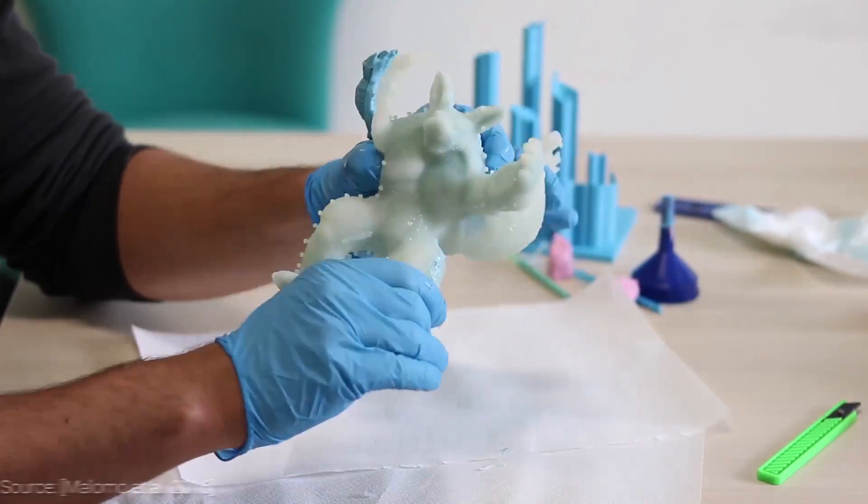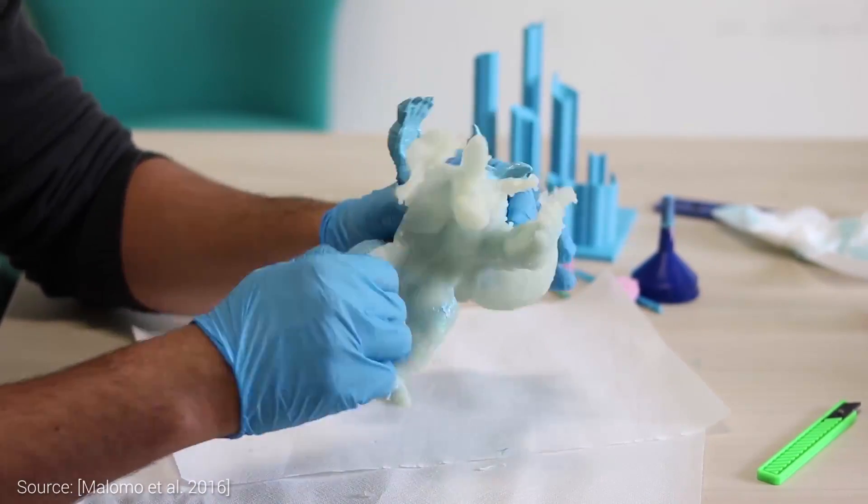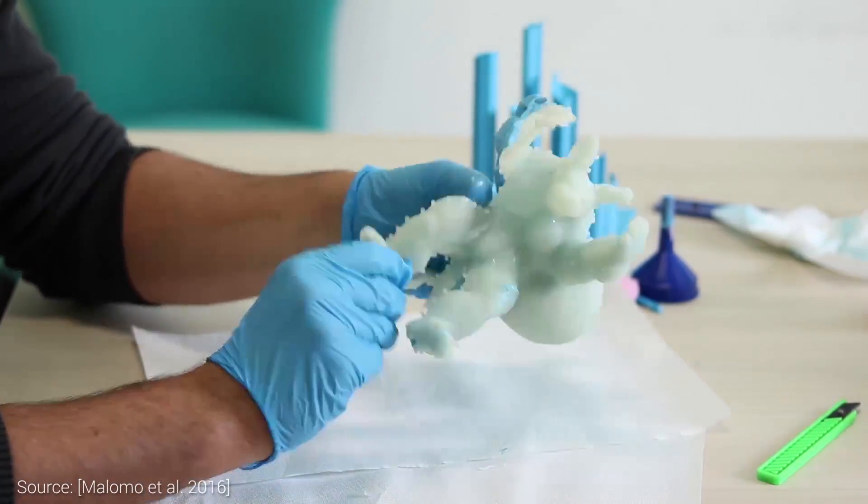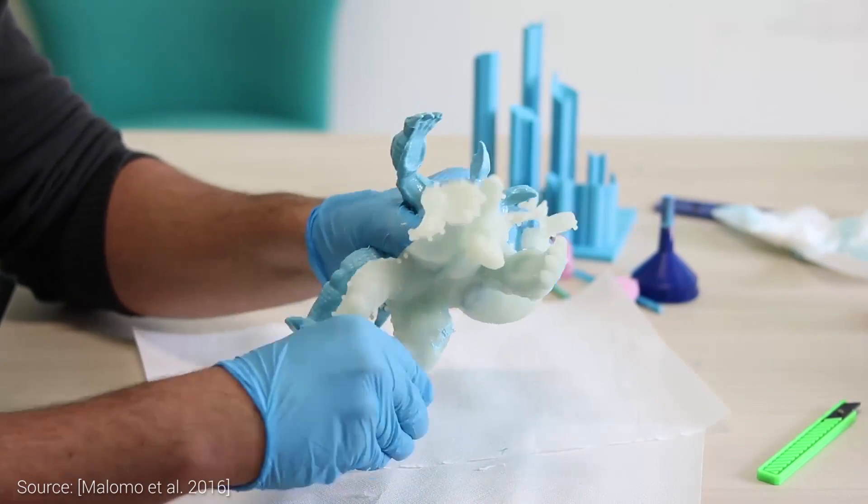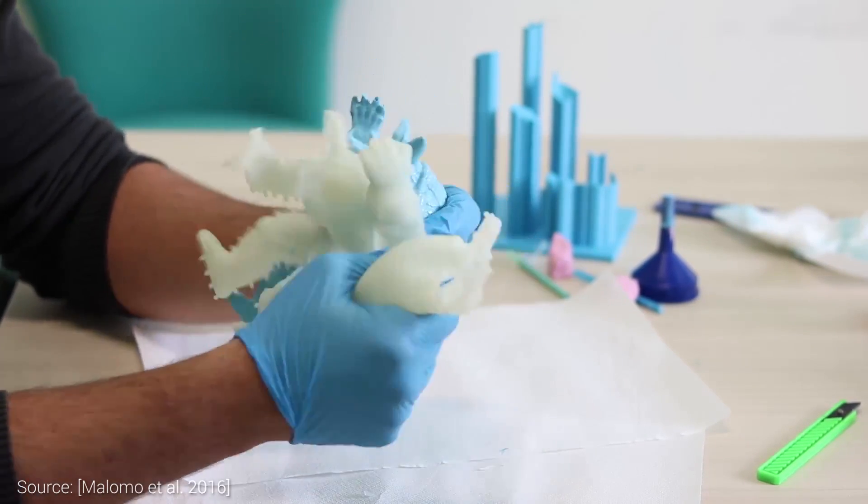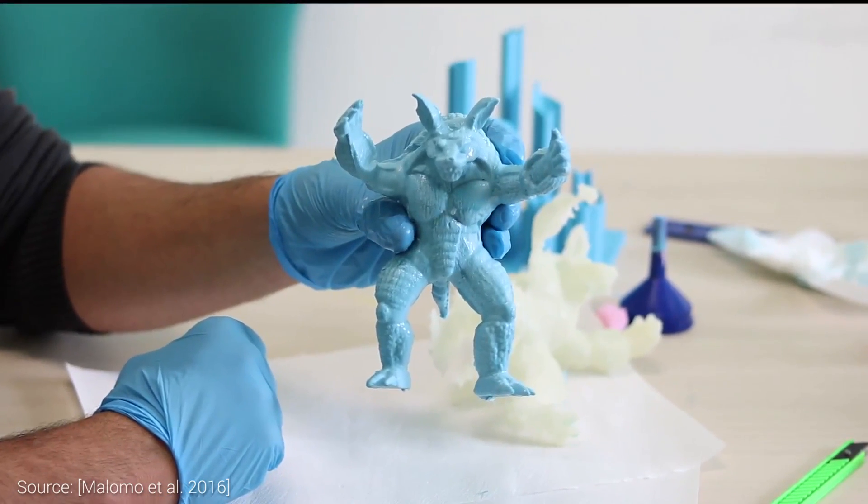This work is about 3D printing flexible molds for objects with detailed geometry. The main observation is that the final object not only has to be cast, but also has to be removed conveniently from the mold.